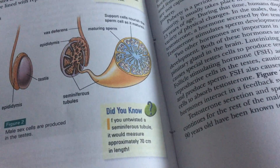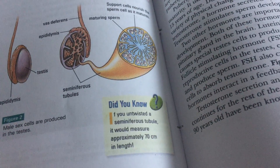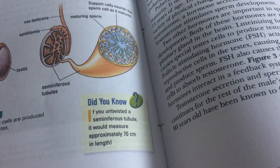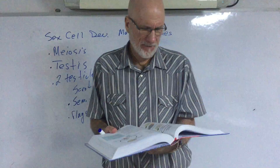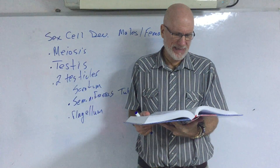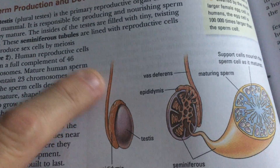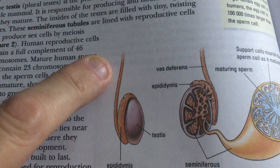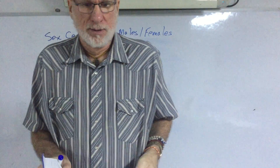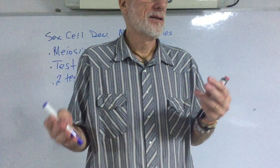Did you know — if you untwisted a seminiferous tubule it would measure approximately 70 centimeters in length? Isn't that amazing? You need to know the anatomy. The vas deferens is the tube that transports the sperm — and that's where things are cut for the male contraceptive technique.